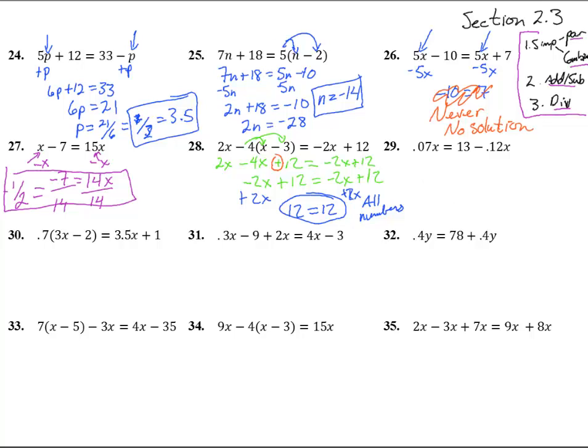Number 29. 0.07x equals 13 minus 0.12x. We could choose to get rid of this x or to get rid of that x to combine them together. Let's pick this one so we can get all the x's over here with the numbers on the other side. We get 0.19x equals 13. Divide by 0.19, we get x equals 13 divided by 0.19, and punch that into your calculator and you get 68.42.